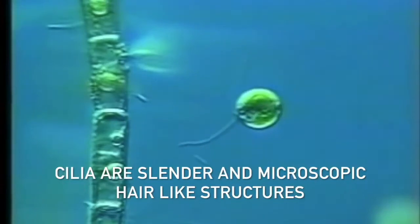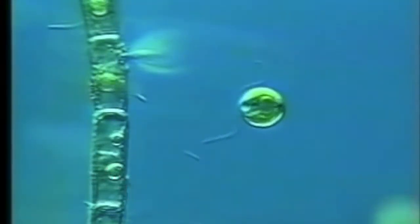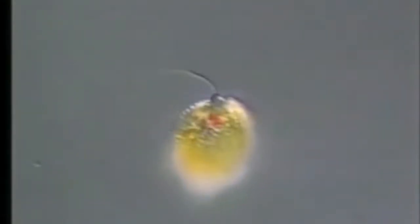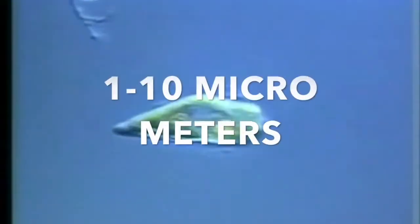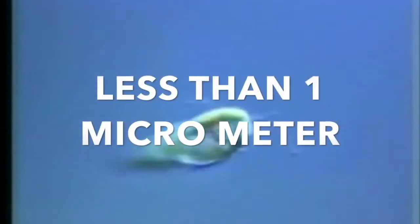Cilia are slender, microscopic, hair-like structures. They are organelles that extend from the surface of nearly all mammalian cells. The ciliary apparatus is connected to the cell cycle progression, and cilia play a vital part in human and animal development in everyday life. The length of a single cilium is 1 to 10 micrometers and a width is less than 1 micrometer.